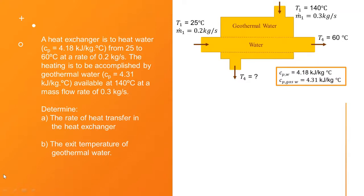Firstly, we draw the schematic diagram. Here we got the water where the water comes in at the temperature of 25 degrees Celsius, and exits at a temperature of 60 degrees Celsius. The geothermal water comes in at 140 degrees Celsius, and the T4, the final temperature, is to be determined.